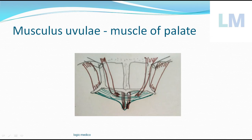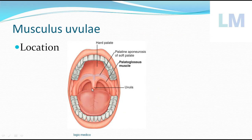Musculus Uvulae is present on either side of the uvula. The soft palate is one in number, and the uvula is located at the posterior border of the hard palate. The soft palate hangs down freely as a muscular curtain at the junction between the nasopharynx and the oropharynx. At the free margin of the soft palate, there is a conical projection called the uvula.